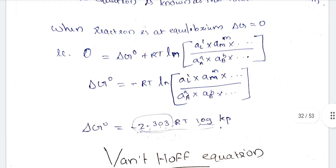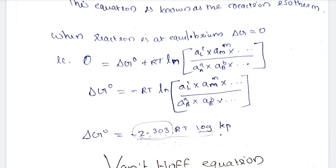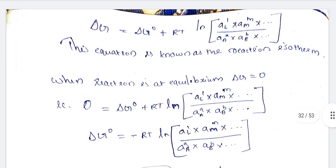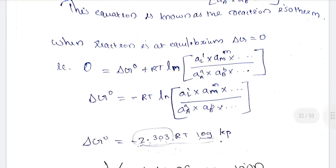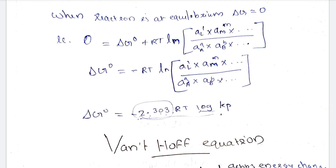Now we look at the equilibrium condition. At equilibrium, delta G = 0, so: 0 = delta G° + RT ln Kp, which gives delta G° = -RT ln Kp. The negative sign tells us that when delta G° is negative, the equilibrium favors products.